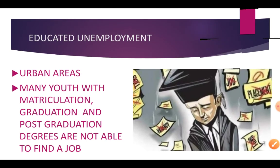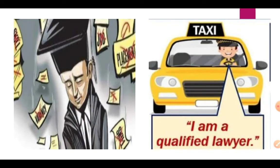Now, educated unemployment — this is especially seen in urban areas. There is a lot of youth that has done matric (10th), graduation (12th), the 3-year degree course after that, or post graduation — that is a 2-year master's degree after graduation. Despite holding so many higher qualifications and degrees, students and youth are not getting work. They are forced to look for small, lower-level jobs. You must have seen whenever a vacancy for peon or chaprassi comes out in schools, the applicants who end up as peons are often highly qualified.